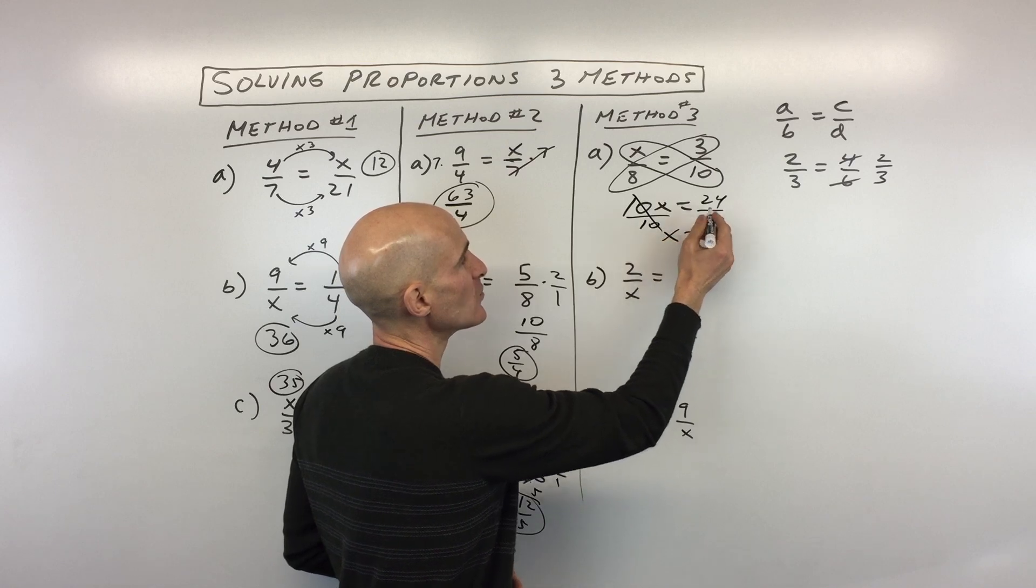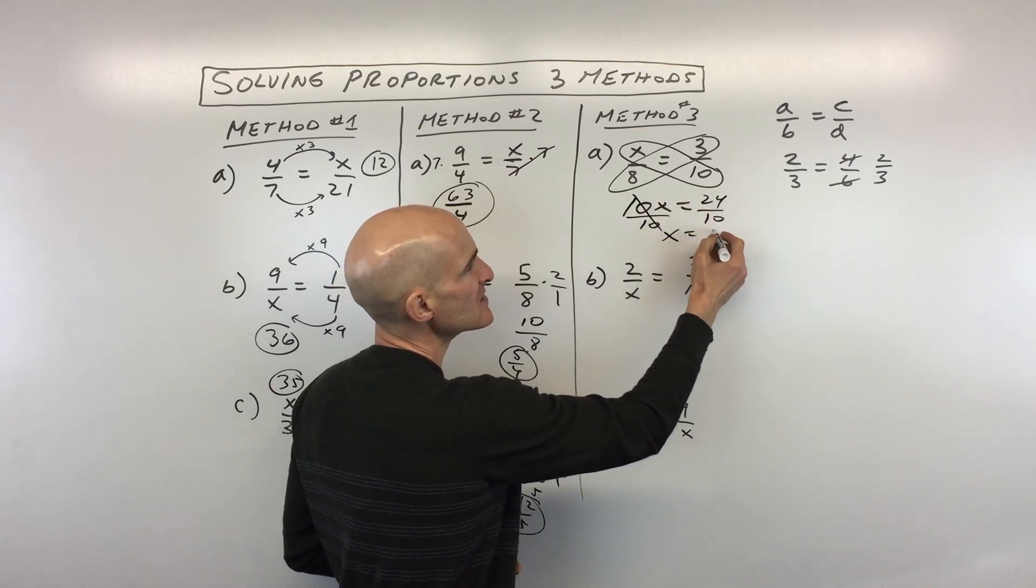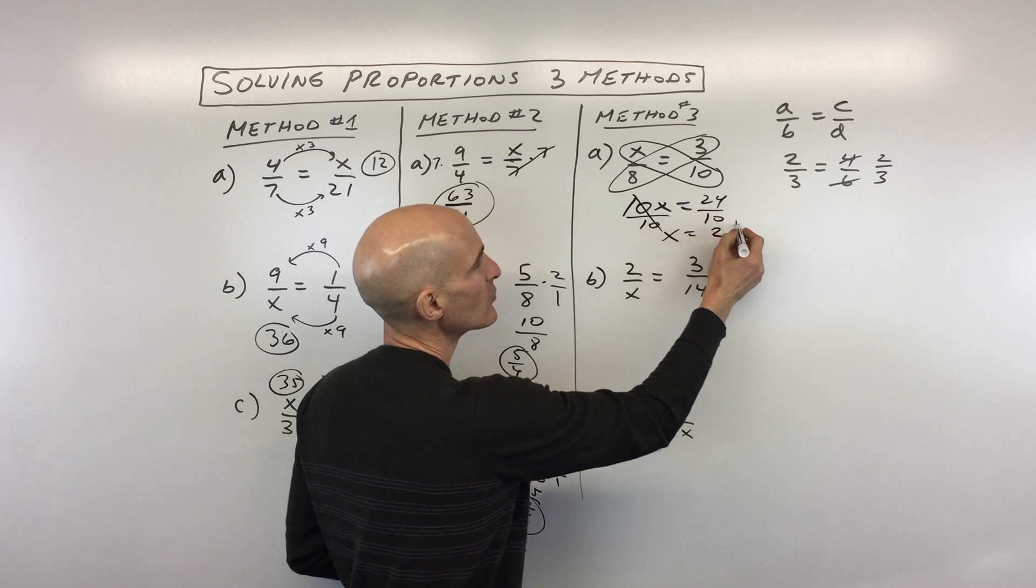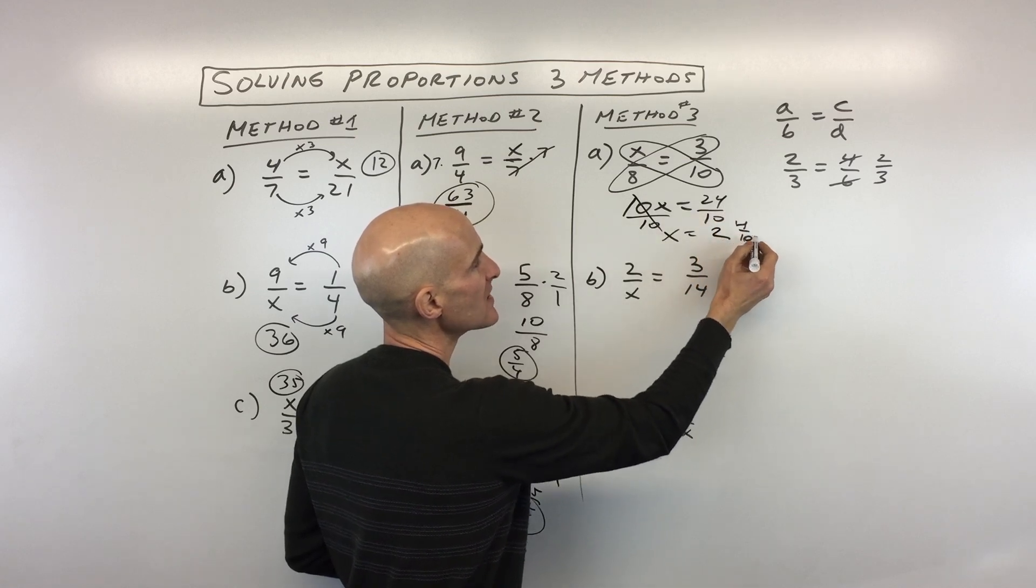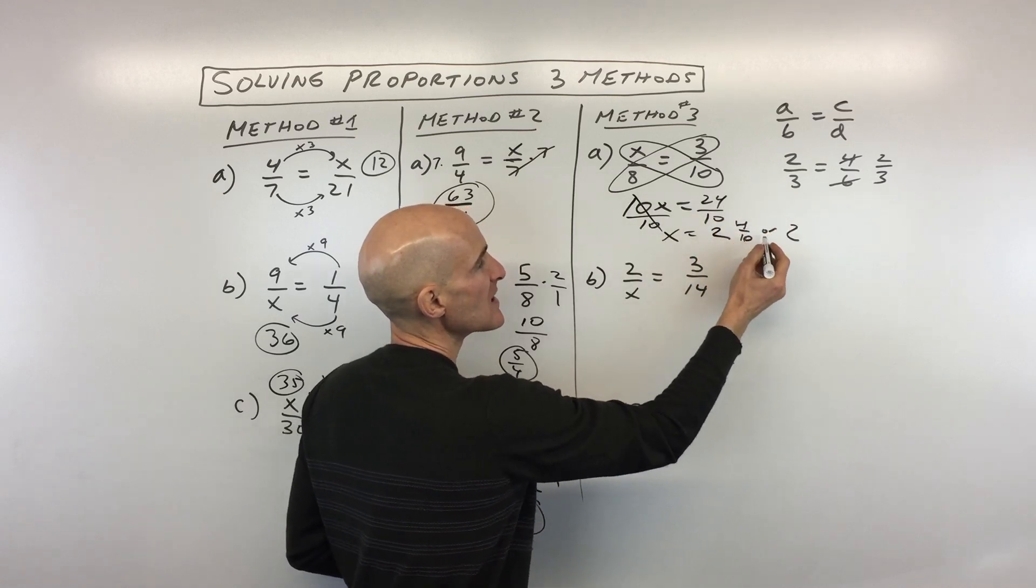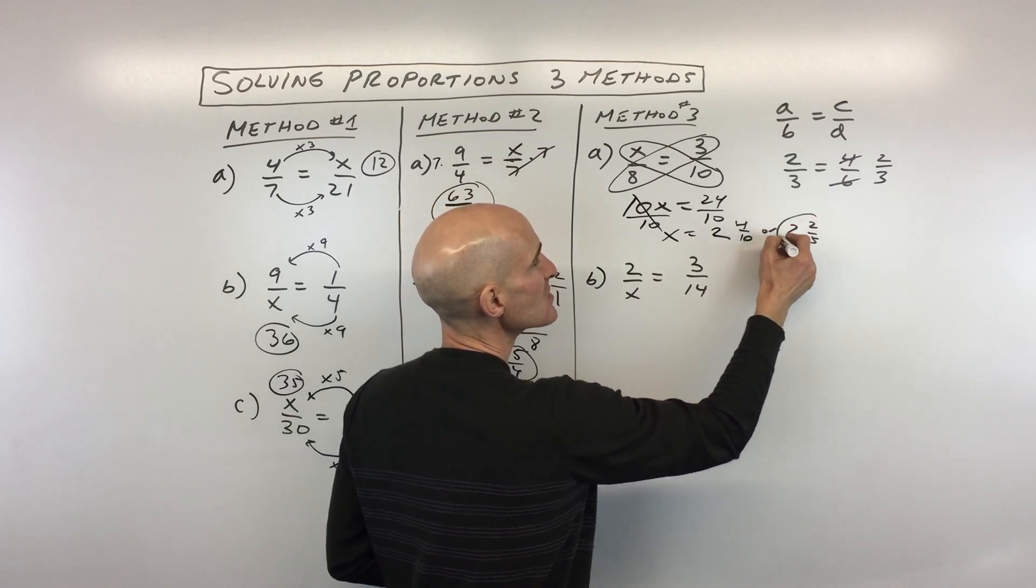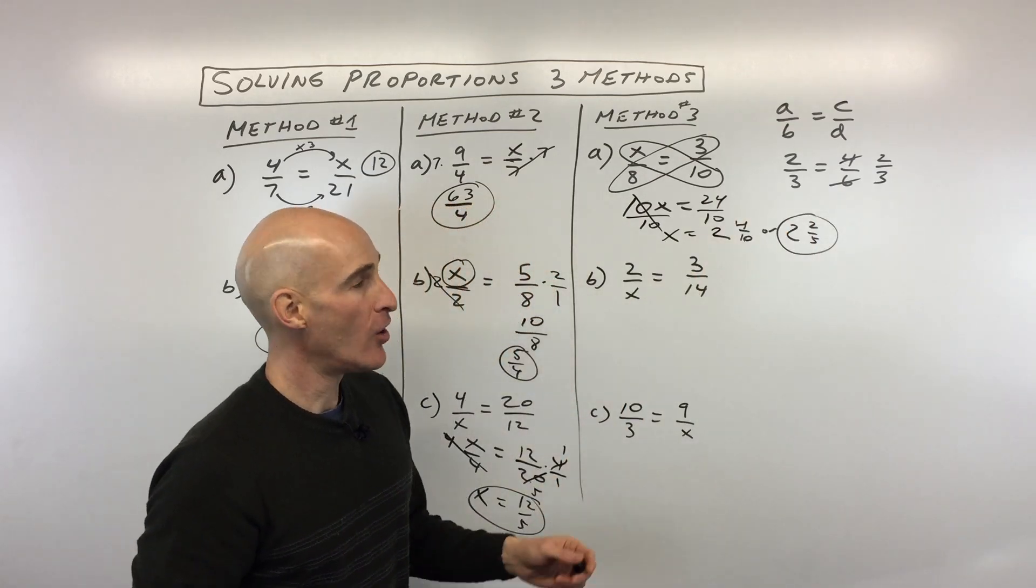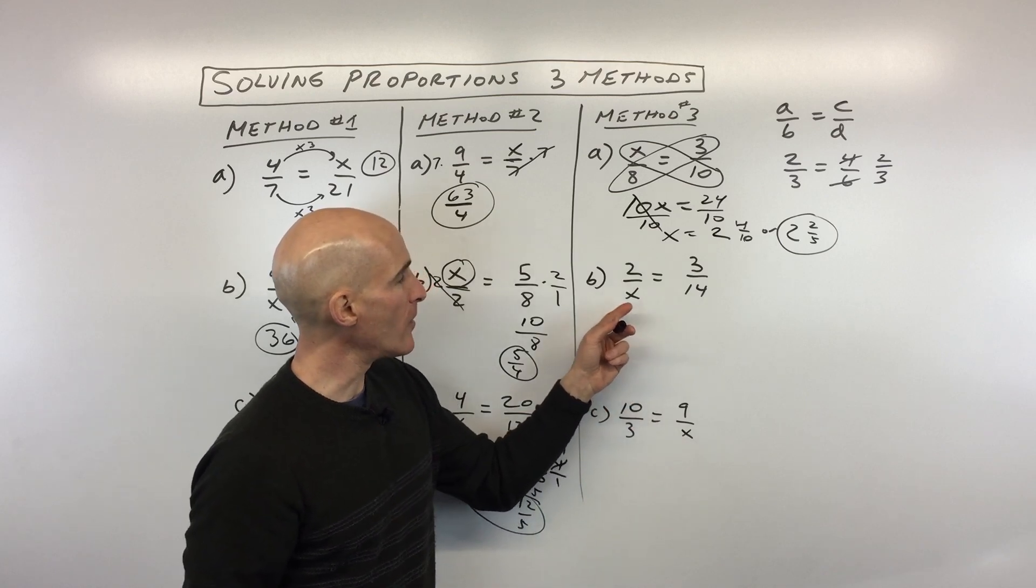So we've got x equals 24/10. And 10 goes into 24, let's see, 2 times with 4 leftovers. So that's 2 and 4/10. Or 4/10, you can reduce to 2/5. So 2 and 2/5. Okay, see if you can try these other two examples. We'll go through them.